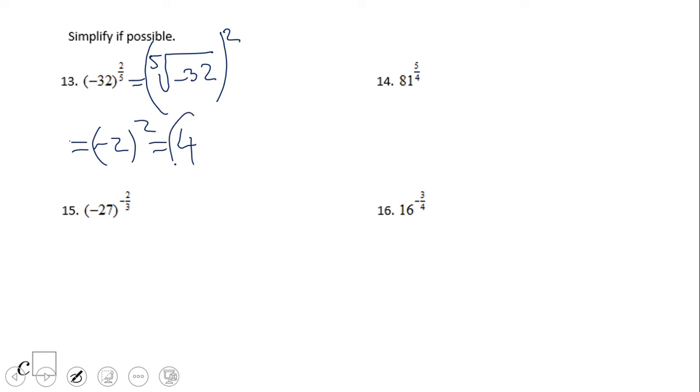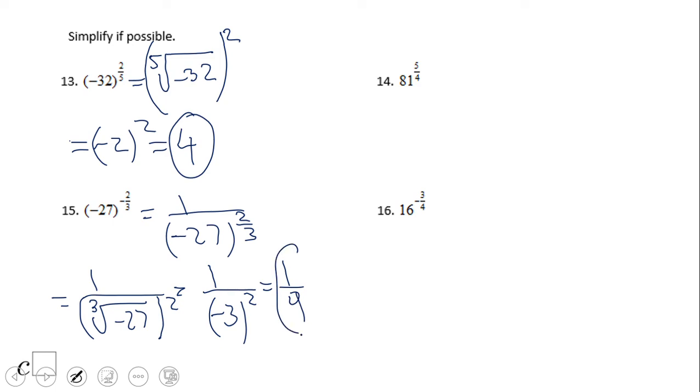What about number 15? Number 15, we have third, oops, don't forget, we have a negative exponent. So first of all, we need to change that negative exponent to a positive exponent. And then we have 1 over cubic root of negative 27, and that cubic root raised to the 2nd power. So we're gonna end up with 1 over, cubic root of negative 27 is negative 3, negative 3 squared. So the answer will be 1 over 9. Go ahead and try number 14 and 16.